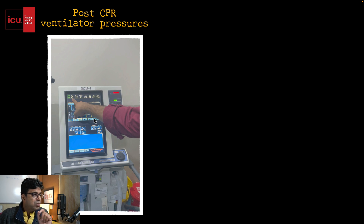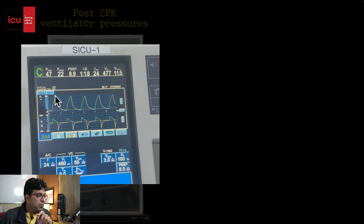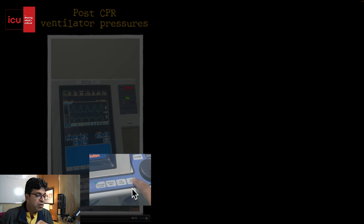The patient came to our emergency, collapsed, underwent CPR, and was ventilated. Looking at the ventilator, we can see the P-peak is 47 — which is significantly elevated; normally around 20 to 22 is acceptable. This is the pressure-time scalar. The total pressure is 47, and we want to determine how much of this is airway resistance versus parenchymal etiology.